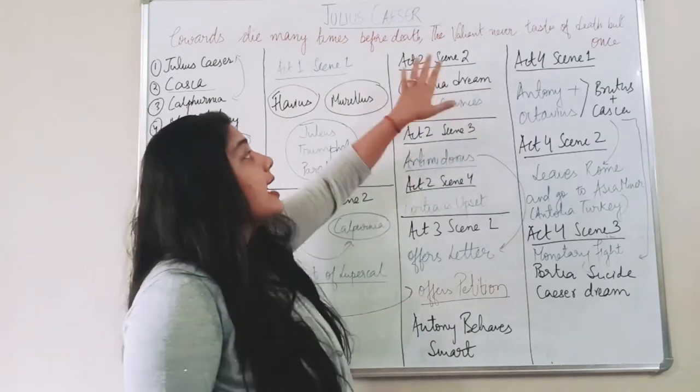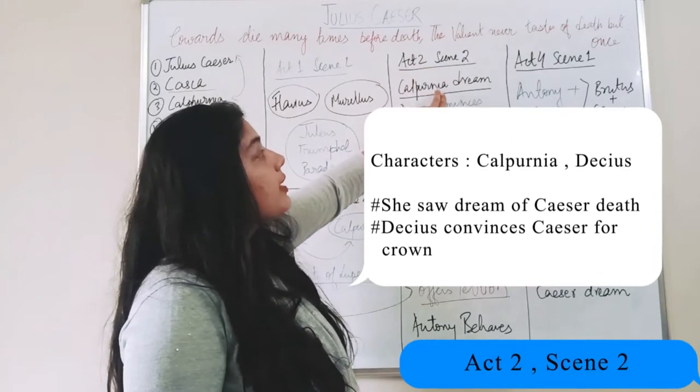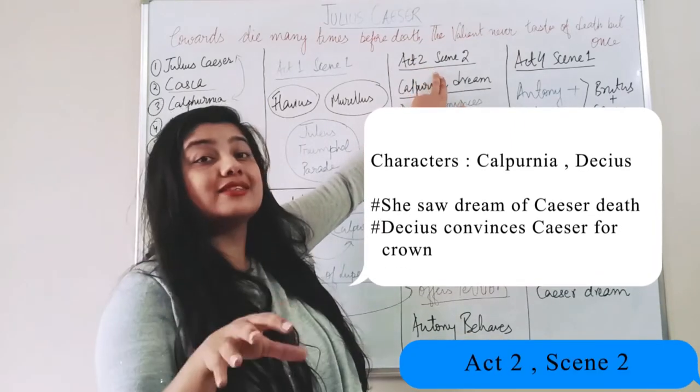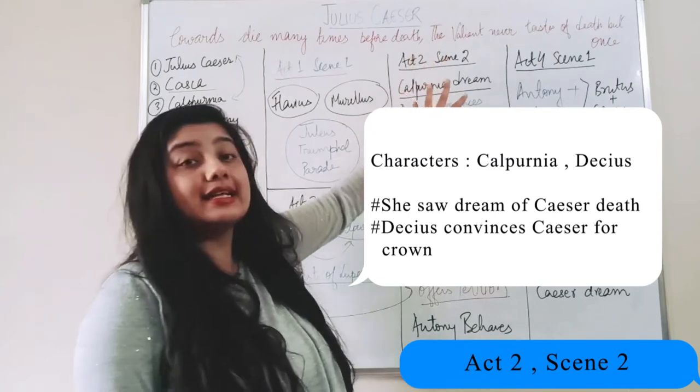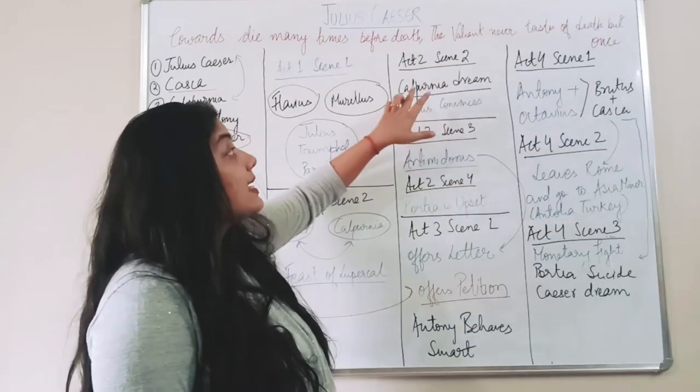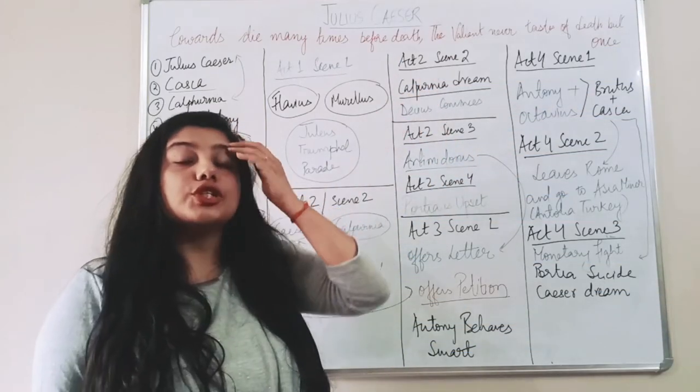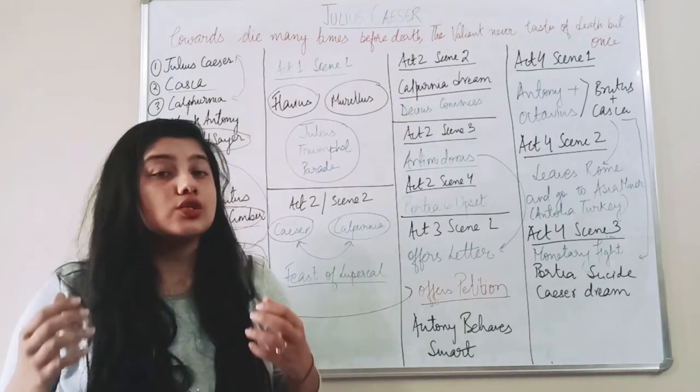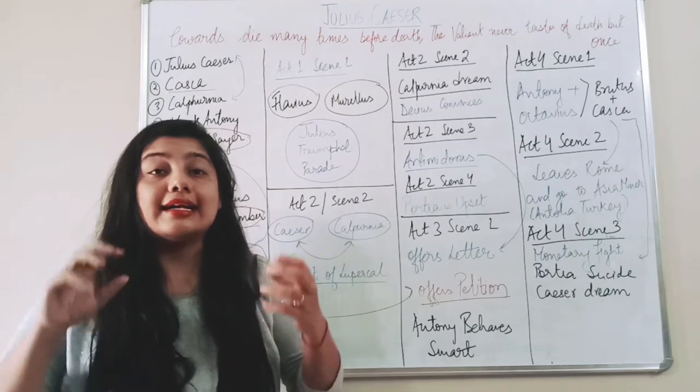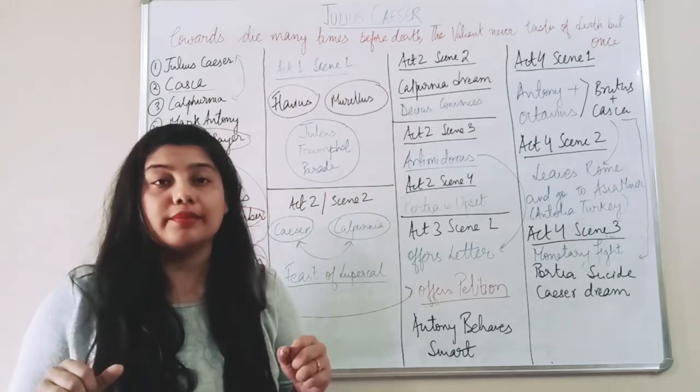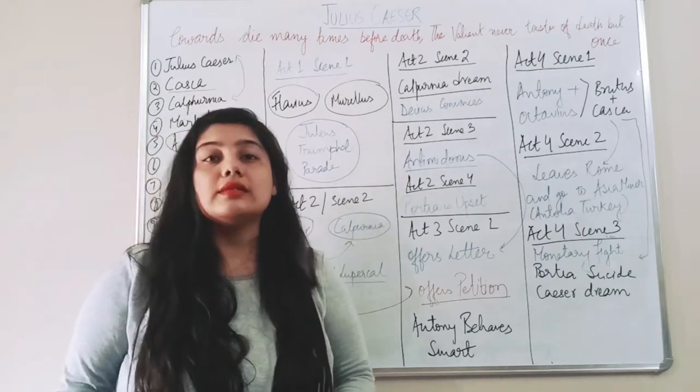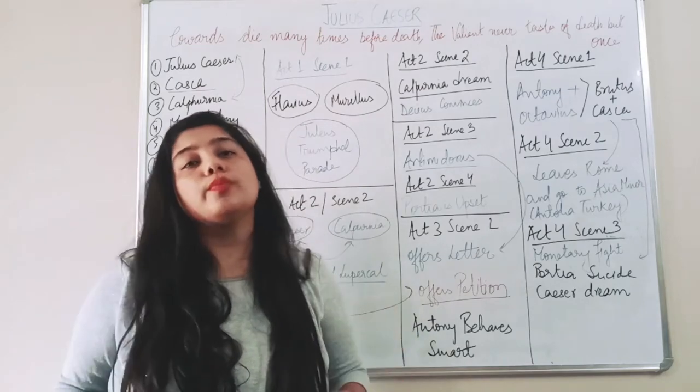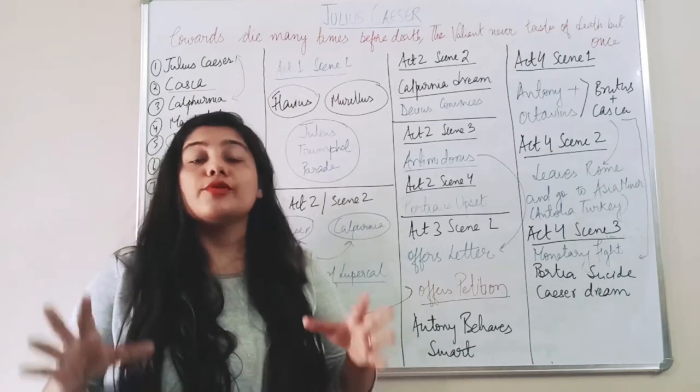That next is Act 2 Scene 2. Now here we are on this point. This is the scene of Caesar's home. This scene is taken, played at the home of Caesar. Calpurnia, the wife of Caesar, she saw a dream where Caesar's death took place. She saw that Caesar had died and something is wrong with him.